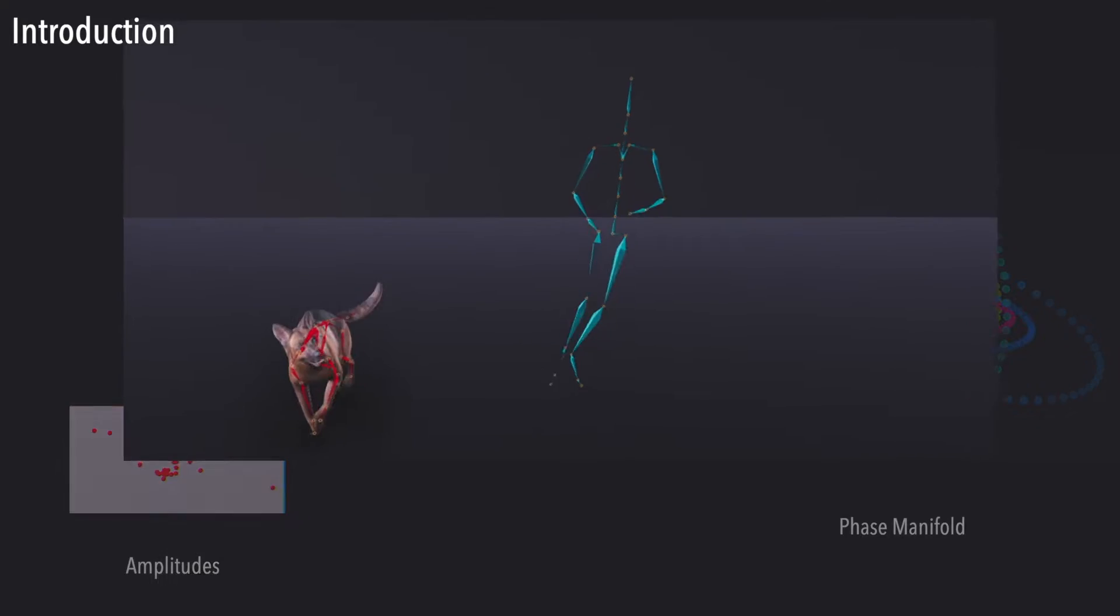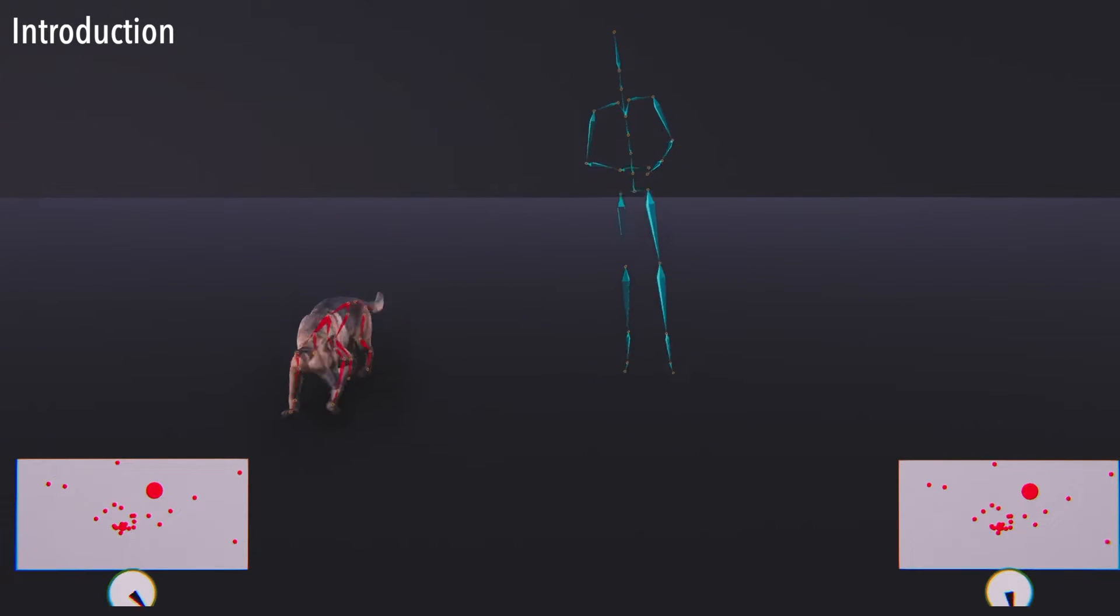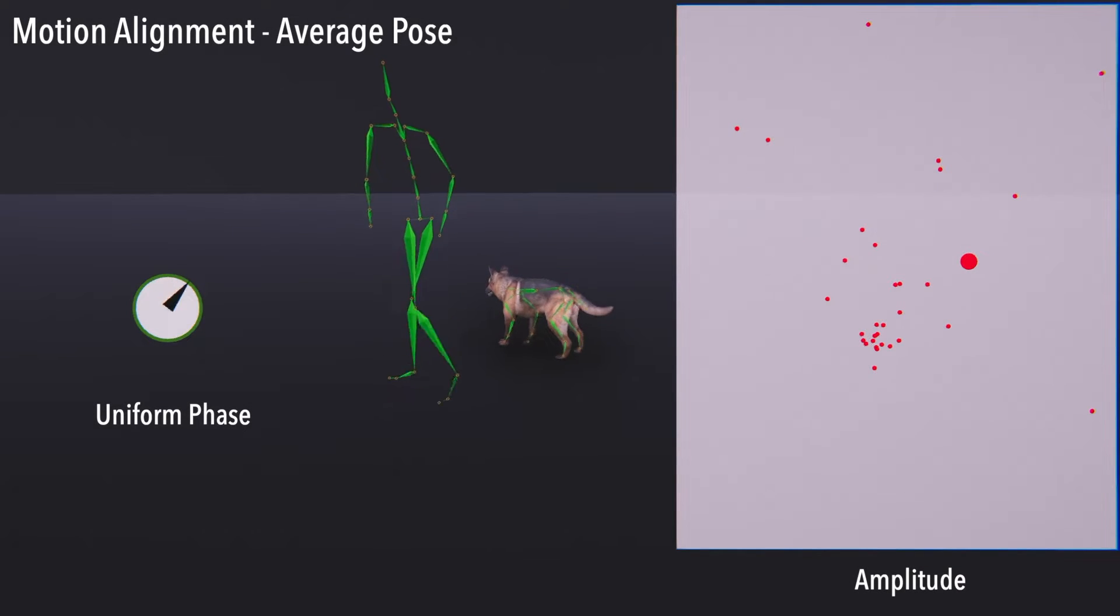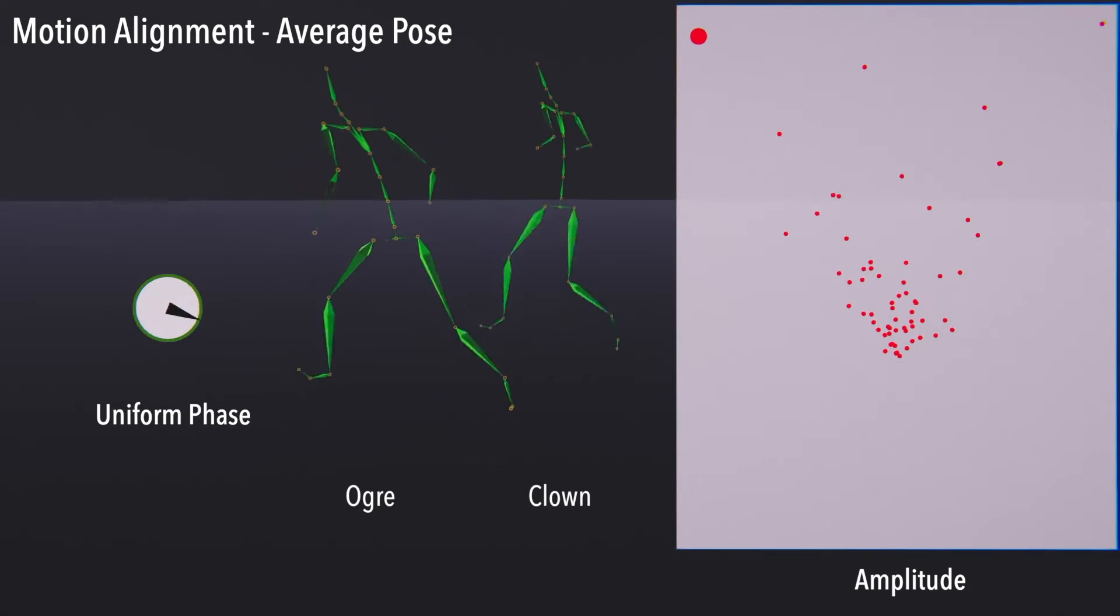We show that it can be a useful tool for unsupervised motion alignment, even for drastically different characters like bipeds and quadrupeds. Our method can effectively cluster raw motion captures from different characters into semantically similar groups, without any paired data or predefined joint mapping.